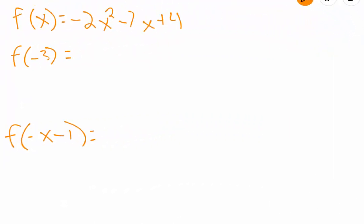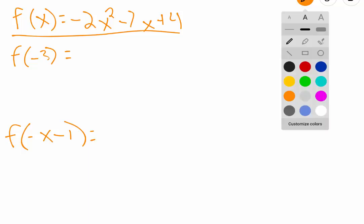We are going to be evaluating the given function for the following two things. So we're given f of x, and we are told to find f of negative 3 and then f of negative x minus 1.